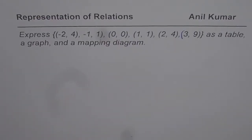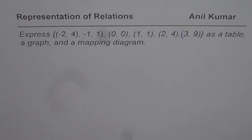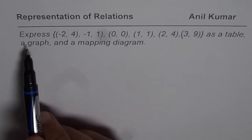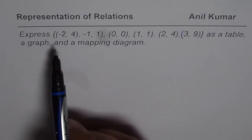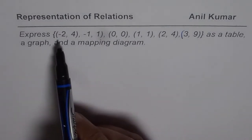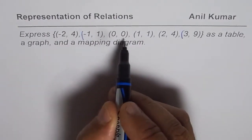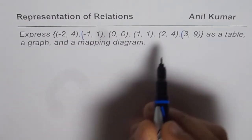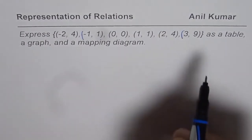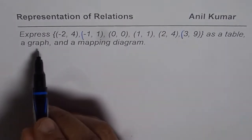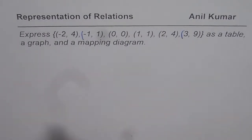I am Anil Kumar and in this video we will learn how to represent relations in different forms. We are given a relation as a set of ordered pairs. The question here is to express this set of ordered pairs — which is (-2,4), (-1,1), (0,0), (1,1), (2,4), and (3,9) — as a table, a graph, and a mapping diagram.